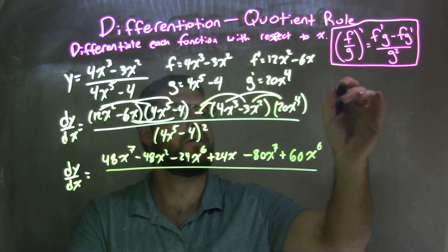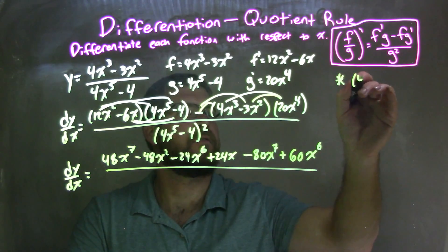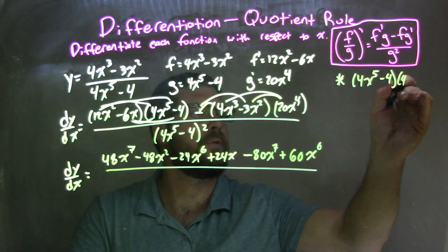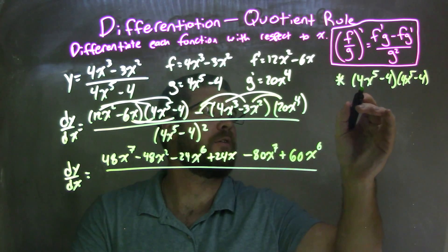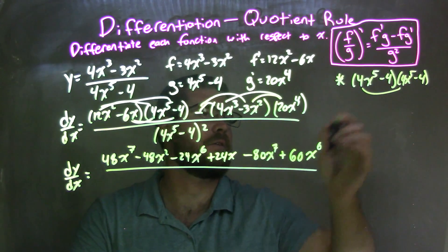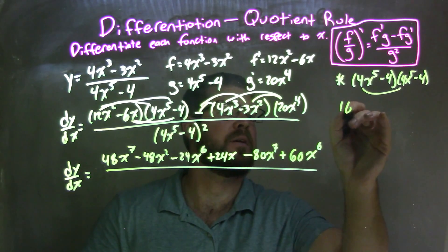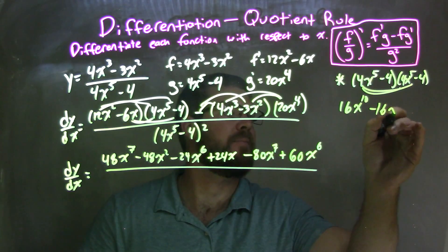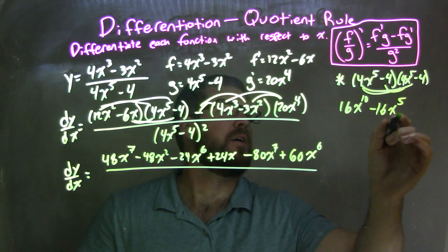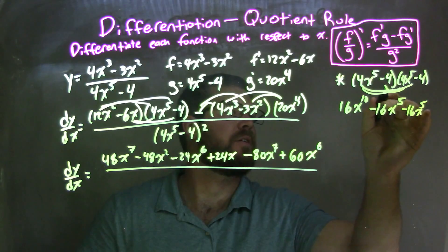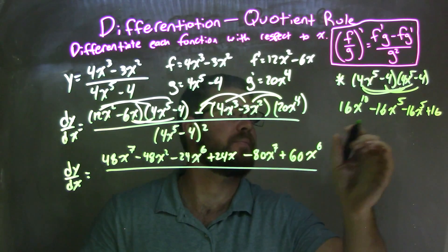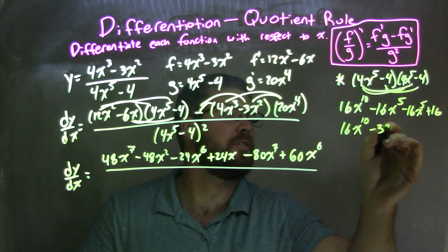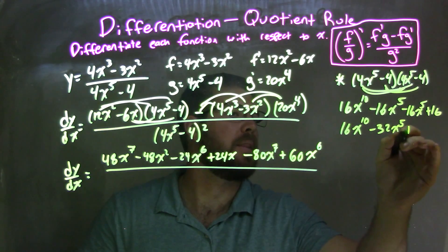All over my denominator: 4x to the fifth minus 4, times 4x to the fifth minus 4. Distributing that out: 4 times 4x to the fifth gives 16x to the tenth, then negative 16x to the fifth, negative 16x to the fifth, and a positive 16. Simplifying, we have 16x to the tenth minus 32x to the fifth plus 16.